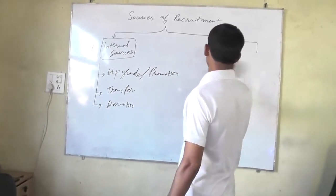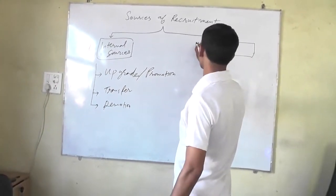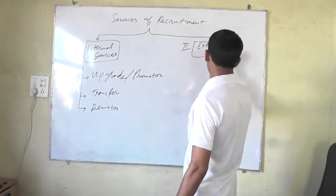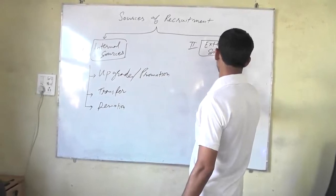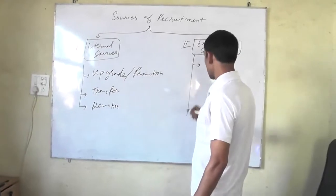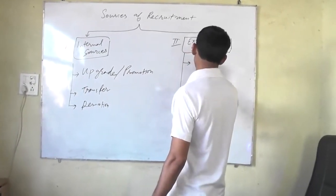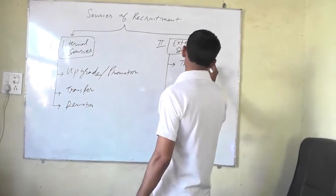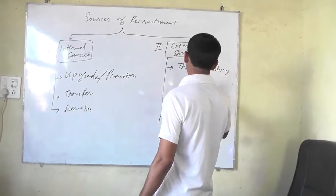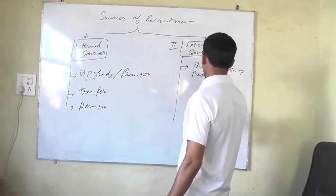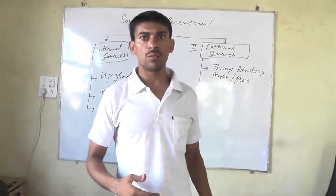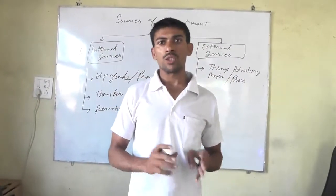Now the second main source is external sources. The first external source is through advertising — advertising in media or press. You just go to the newspaper and show the ad.